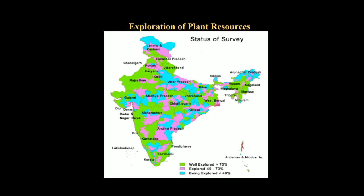Regarding exploration of plant resources, the present status can be studied under three categories: well explored, explored, and being explored. Well-explored regions — highlighted in green — have more than 70% of flora explored. Explored regions — highlighted in pink — have flora explored between 40 to 70%. Being-explored regions — highlighted in blue — have less than 40% of flora explored.